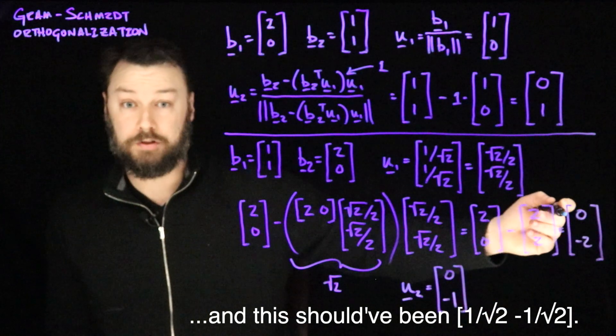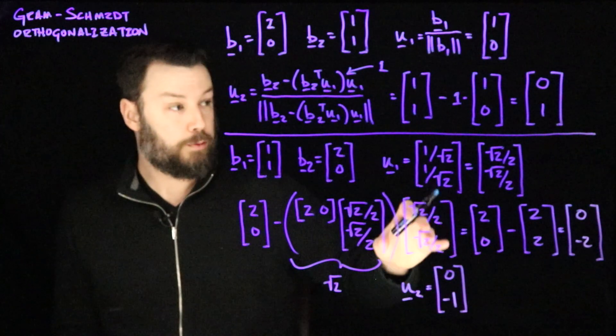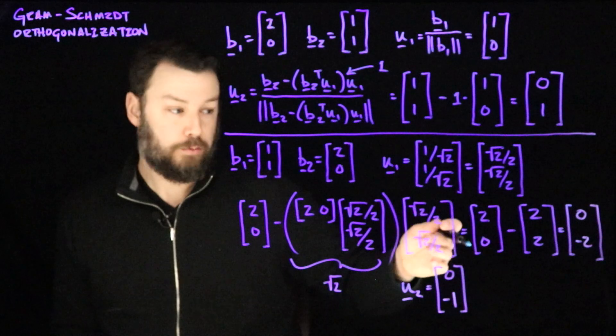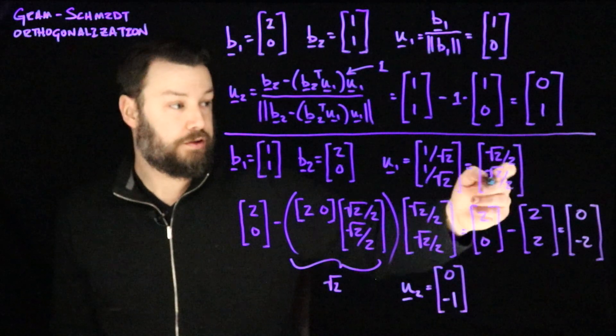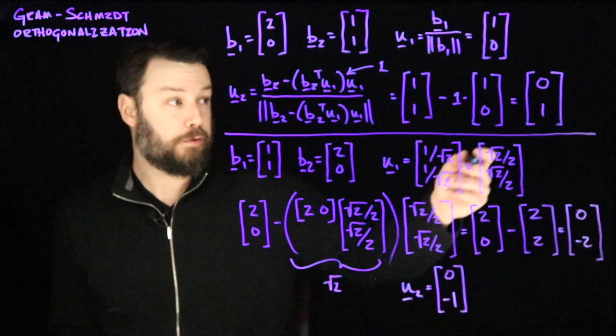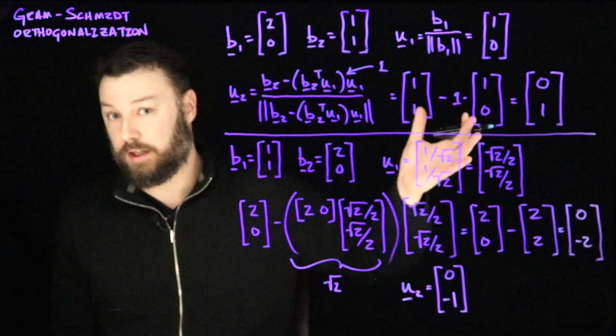So dividing that by its norm. When we do these in a different order, we get a different basis. We get the basis of this u1 and this u2. And that's different from what we did here, where we got the standard basis.